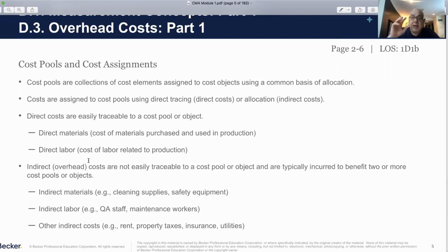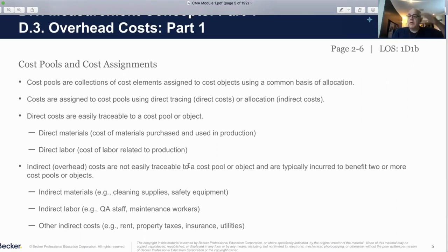We distinguish between direct and indirect costs. Direct costs are easily traceable; indirect costs are not easily traceable to a cost pool, so we need to accumulate and then allocate them. Every manufacturing organization — and manufacturing doesn't always mean machinery, even a restaurant manufactures sandwiches — when you have labor and material involved, it's a manufacturing process. You break down costs into direct material, direct labor, and indirect, which can include indirect material like cleaning supplies and safety equipment, indirect labor like supervisors and cleaners, and other indirect costs like insurance, utilities, and taxes.